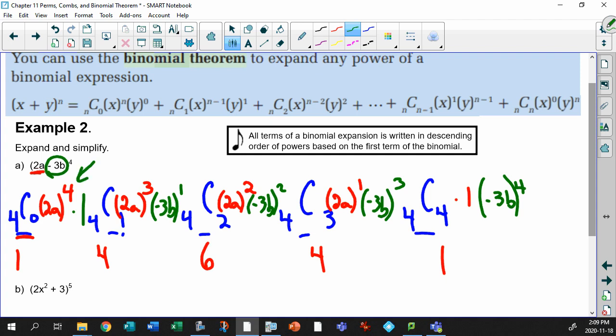Now here we go. 2a to the 4, that means 2 to the power of 4. So 2 times 2 is 4, times 2 is 8, times 2 is 16. This will be times 16a to the 4 times 1 from the y. This will be 2a to the power of 3. 2 to the power of 3 is 8, so this will be plus 8a cubed. And then minus 3b to the 1, so times minus 3b. That's simple enough.